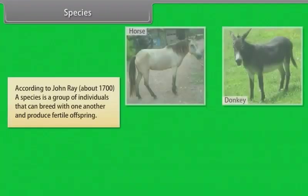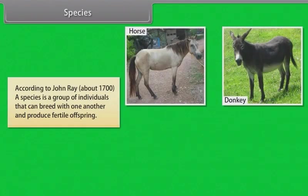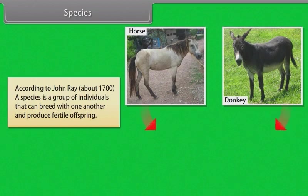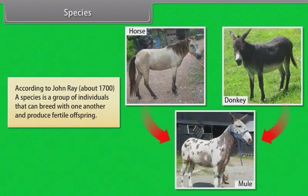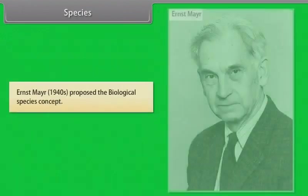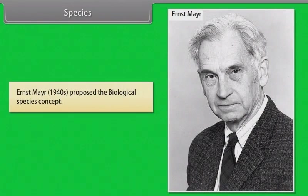According to John Ray, around 1700, a species is a group of individuals that can breed with one another and produce fertile offspring. Ernst Mayr, around the 1740s, proposed the biological species concept.